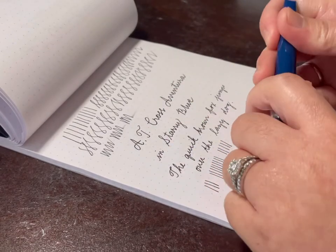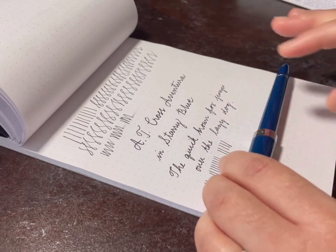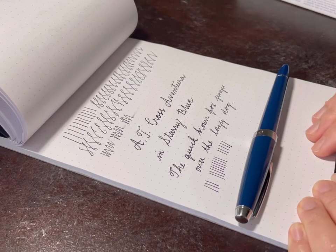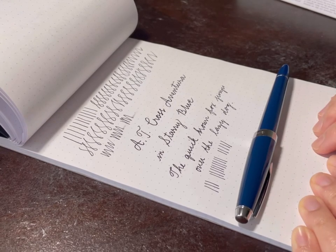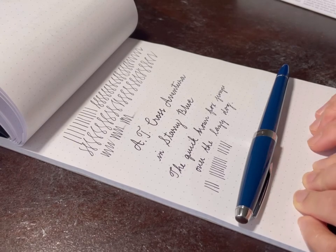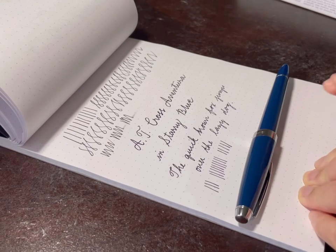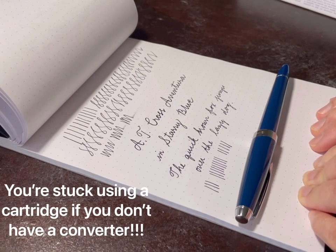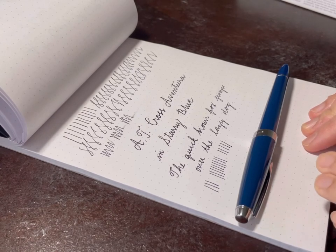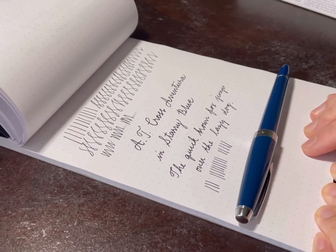What are the other cons? I do not like the fact that this does not come with a converter. Because other fountain pens that are cheaper comes with a converter. Like the Jinhao pen comes with a converter and this one does not. So likely, you're going to be stuck using a cartridge. And I don't really like using the cartridge. Just because I like trying out different bottle inks.